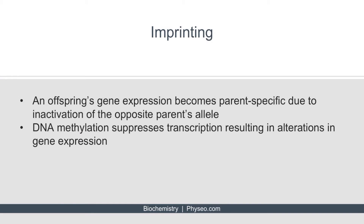Imprinting refers to the idea that an offspring's gene expression becomes parent-specific due to inactivation of the opposite parent's allele. This is commonly caused by DNA methylation, which suppresses transcription and can alter gene expression.